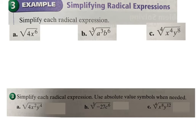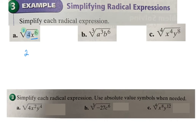Now we'll simplify radicals with variables. Take the number first: the square root of 4 is 2. For variables, take the exponent and divide by the index. Exponent 6 divided by index 2 gives 3 with a remainder of 0, meaning 3 x's come out and none stay inside the radical. So the square root of 4x⁶ equals 2x³.